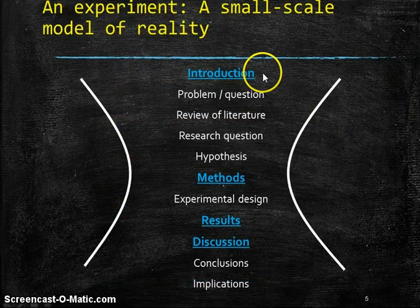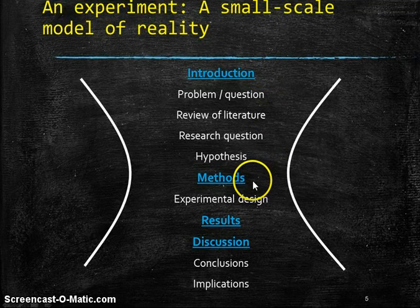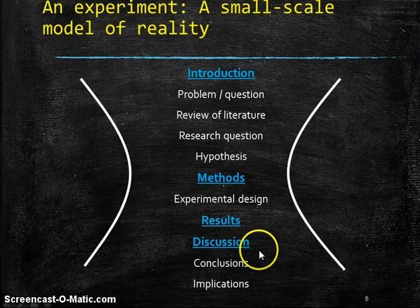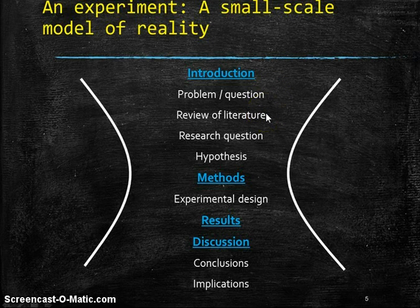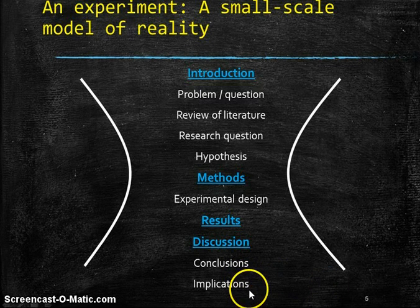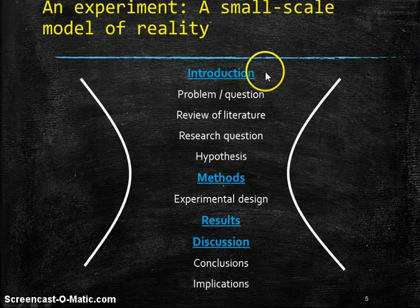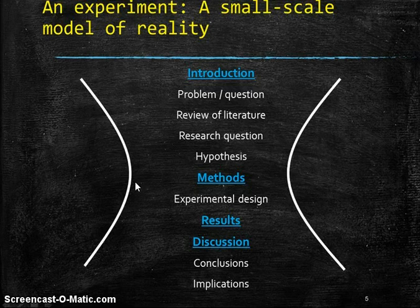So if we look here, we see that there are four main parts of the research article: the introduction, the methods, the results, and the discussion. The introduction, which deals with a problem or a question in the literature, the previous research. And then the discussion, which are the conclusions and the implications. These relate to the real world, the introduction and the conclusion. And the methods and the results, that's the experiment. And that's here. So again, we see our hourglass shape.